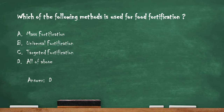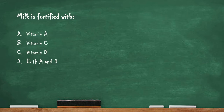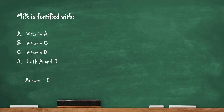Next question: milk is fortified with — option A: vitamin A. Option B: vitamin C. Option C: vitamin D. Option D: both vitamin A and D. The right answer is option D — both vitamin A and vitamin D. Milk is fortified with these two vitamins, and their most active, absorbable forms are added during the fortification process.